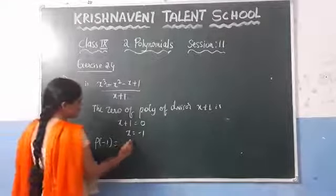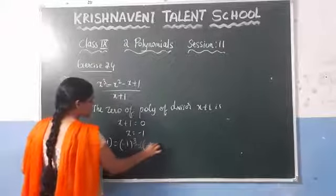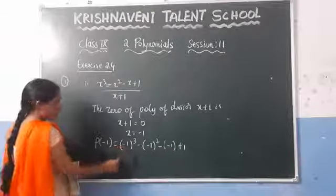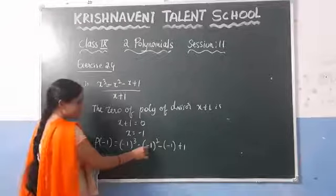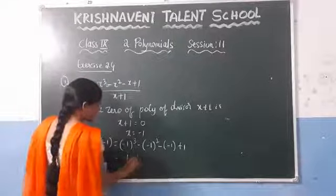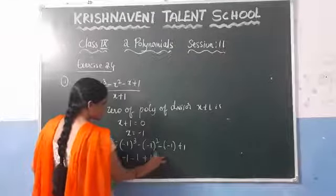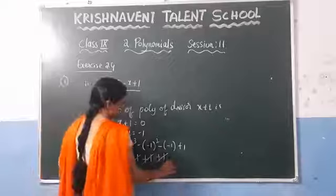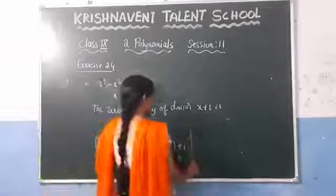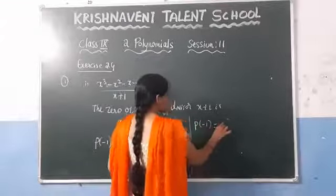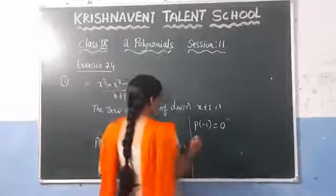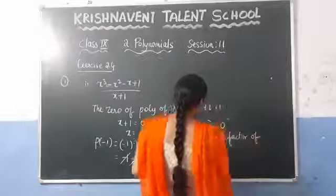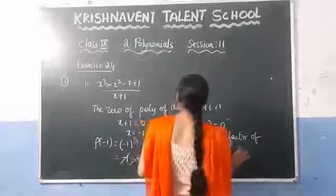p of minus 1 is: minus 1 whole cube, minus minus 1 whole square, minus minus 1, plus 1. The value of minus 1 whole cube is minus 1, and minus 1 whole square is 1. So we get: minus 1, minus 1, plus 1, plus 1. The minus 1 and plus 1 cancel, giving 0. Since p of minus 1 equals 0, we can say that x plus 1 is a factor of x cubed minus x squared minus x plus 1.